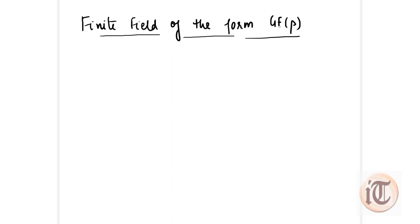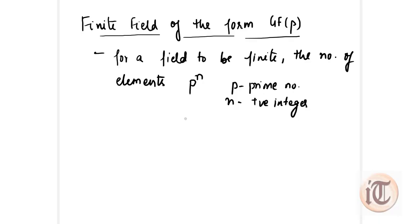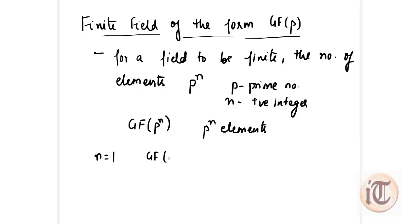The next topic is finite fields of the form GF(p). GF stands for Galois field and P is your prime number. Galois showed that for a field to be finite, the number of elements should be p to the power n, where P is your prime number and n is your positive integer. A Galois field GF(p^n) is a finite field with p^n elements. When n equals 1, the Galois field looks like GF(p), because p to the power 1 is just p.